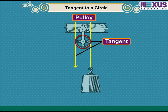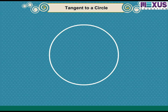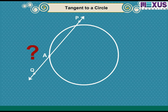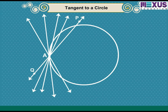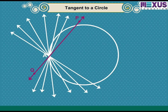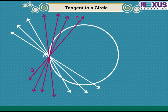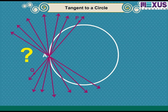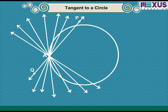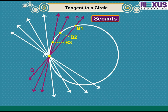Let us understand the tangent of a circle with the help of a diagram. First, draw a circle with point A marked on it. Draw a straight line PQ passing through point A of the circle. How many tangents can we draw to a circle at a given point A? Let us draw some lines passing through point A by turning line PQ about point A to get different positions. In various positions, the line intersects the circle at A and at another point B1, B2, B3, etc. Hence, they are secants but not tangents to the circle.